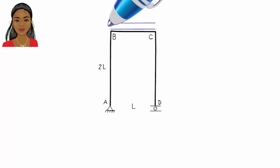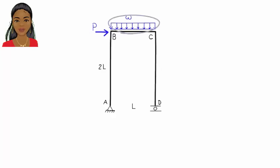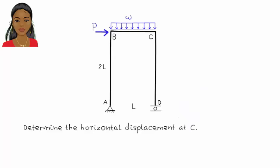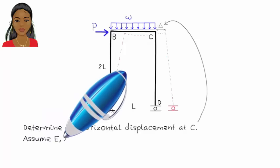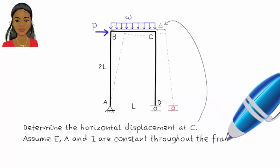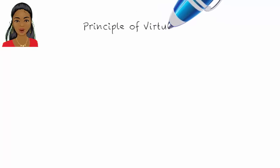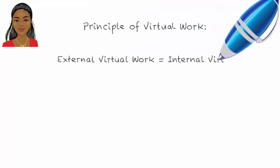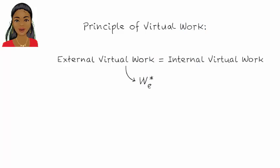Consider this simple frame structure. It consists of three members. The frame is subjected to a horizontal concentrated load and a uniformly distributed load as shown. We would like to determine the horizontal displacement at C. According to the method of virtual work, we can solve for the unknown displacement by equating the external virtual work to the internal virtual work done by a virtual unit load placed at C. Let W* sub E stand for external virtual work and W* sub I stand for internal virtual work. Then we can write W* sub E equals W* sub I.